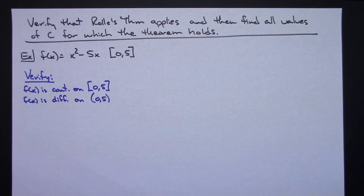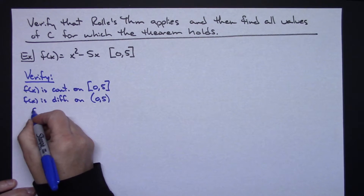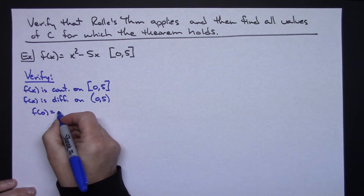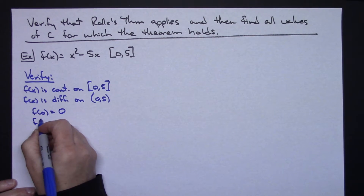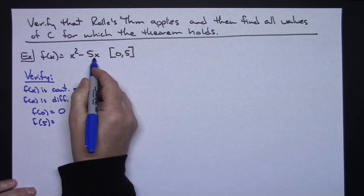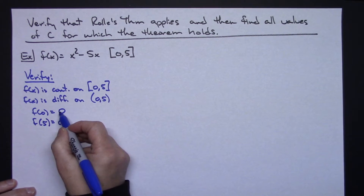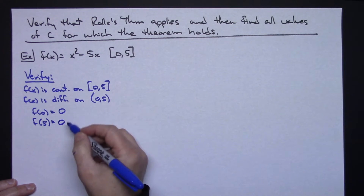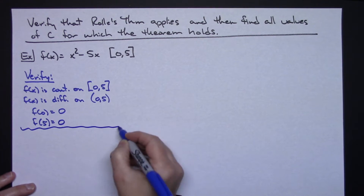Then F of A has to equal F of B, so we do some calculations. Plugging in F of 0: substituting 0 gives 0. Plugging in F of 5: 25 minus 25 gives 0 again. So F of A does equal F of B. I've verified everything needed to confirm the theorem holds.